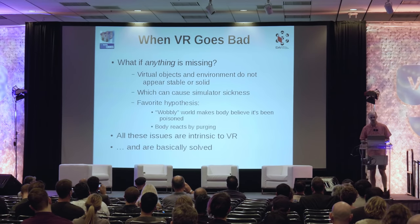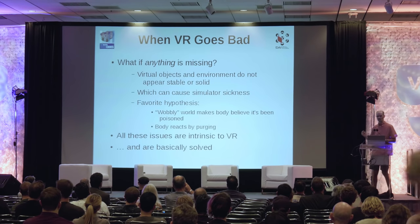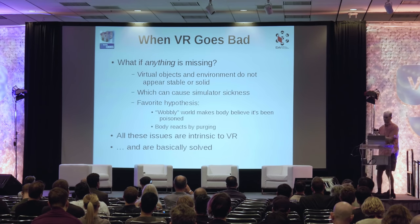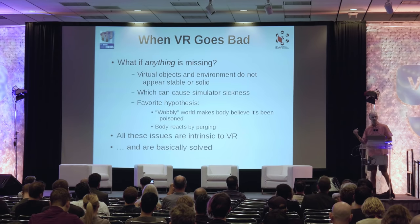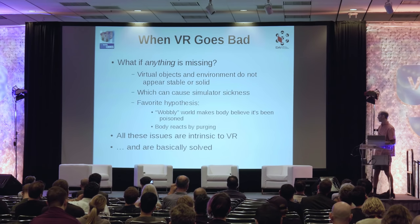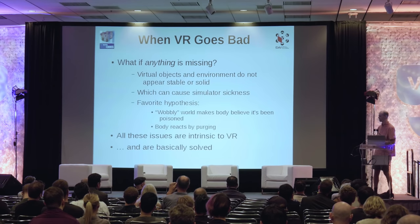When any of these things go wrong — latency too high, bad calibration — virtual objects do not appear stable: they swim, wobble, deform, and warp. This can cause simulator sickness. The actual mechanism isn't 100% understood; one favorite hypothesis is the 'poisoning' one, where the body thinks you're poisoned — like you drank too much — and purges to get rid of it. The good news is that all of these intrinsic VR issues are basically solved, and for a static scene, the vast majority of people will experience no discomfort.